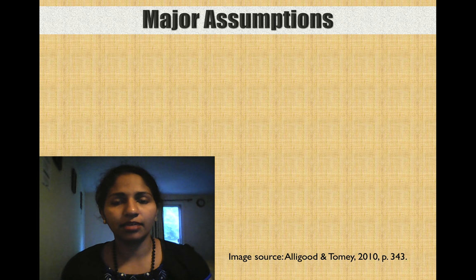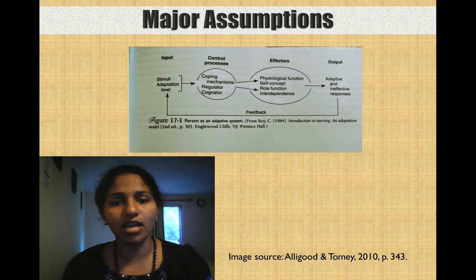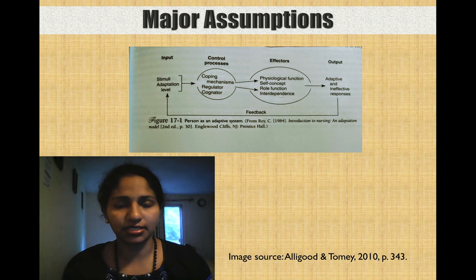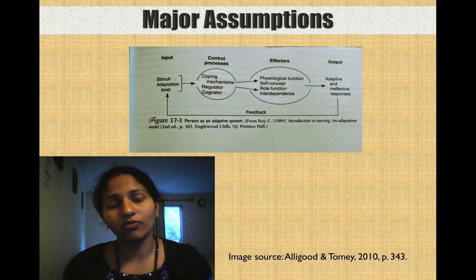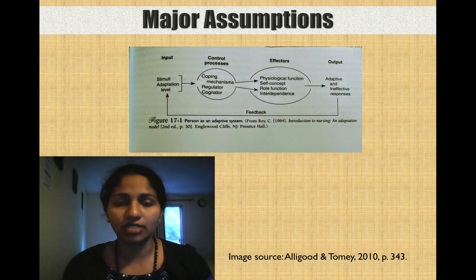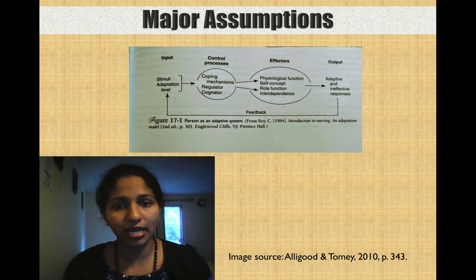This diagram depicts the Roy adaptation model at a glance. Stimuli — focal, contextual, and residual — as well as the adaptation level of the patient, act as the input that triggers coping mechanisms such as regulator and cognitive subsystems. These act through the four modes: physiological, self-concept, role function, and interdependence. As a result, the final outcome is either an adaptive state or an ineffective response. In the ineffective response, the patient becomes ill, while in the adaptive state, the patient retains health.